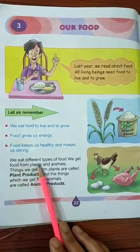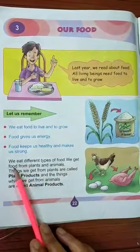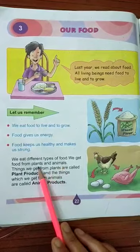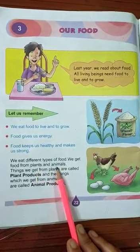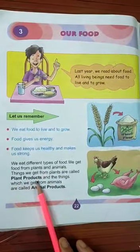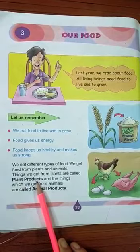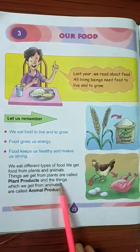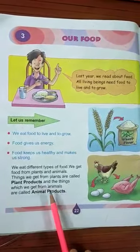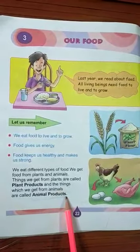We eat different types of food. हम लोग तरह-तरह के भोजन खाते हैं। We get food from plants and animals. जो भोज्य पदार्थ हमें पेड़-पौधों से प्राप्त होते हैं उन्हें plant products कहते हैं, और जो खाने की वस्तुएं हमें जानवरों से मिलती हैं उन्हें animal products कहते हैं।